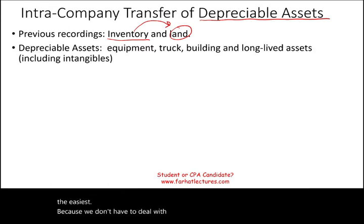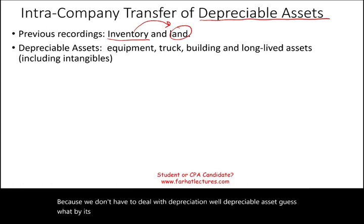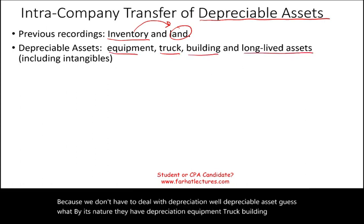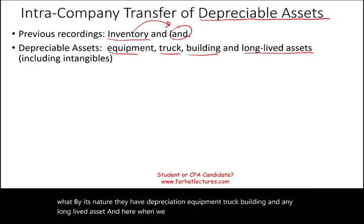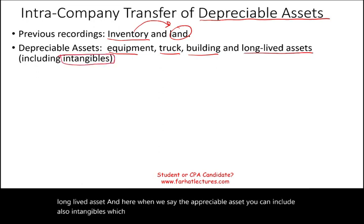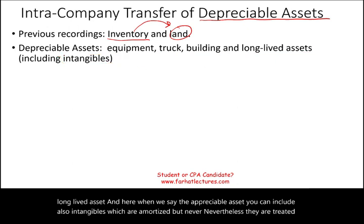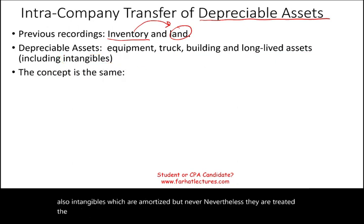Depreciable assets, by their nature, have depreciation — like equipment, trucks, buildings, and any long-lived asset. When we say depreciable asset, you can also include intangibles, which are amortized; nevertheless, they are treated the same. The concept is the same.